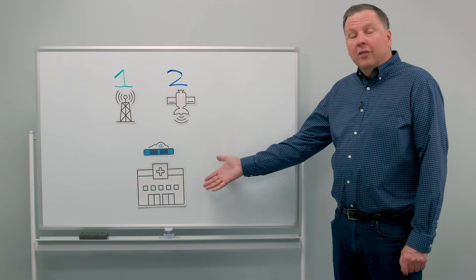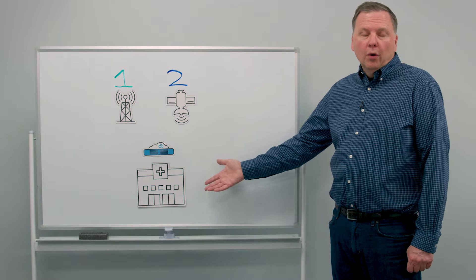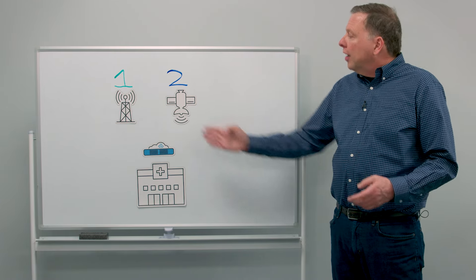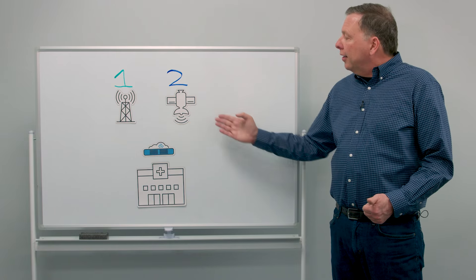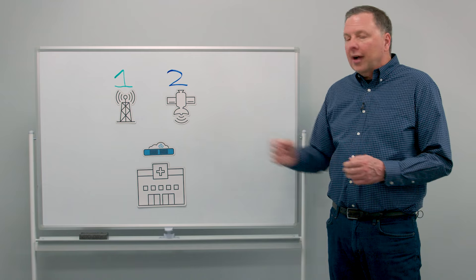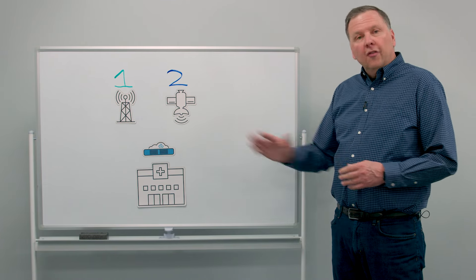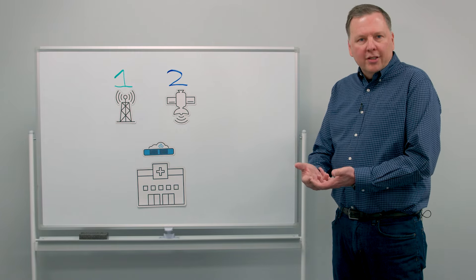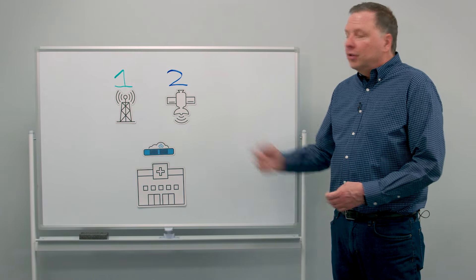In this third example, we've got a clinic located in a remote location where wire lines just aren't available. So we've got cellular and we've got satellite. As long as cellular is performing well, we'll pass traffic on cellular. If for some reason the cellular has a problem, we'll intelligently switch over and fail over to the satellite link.